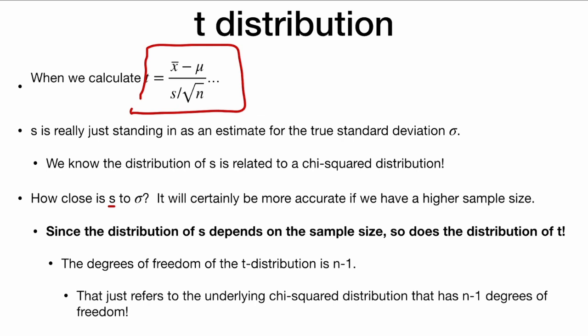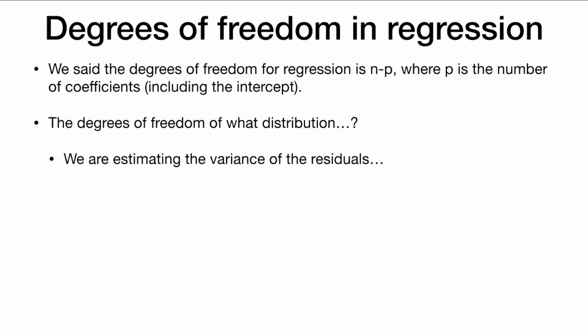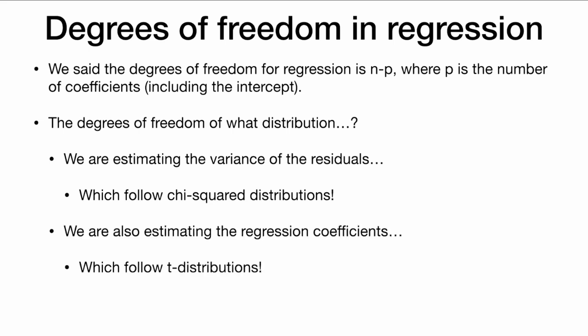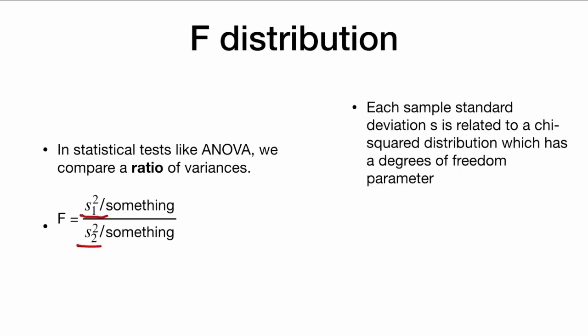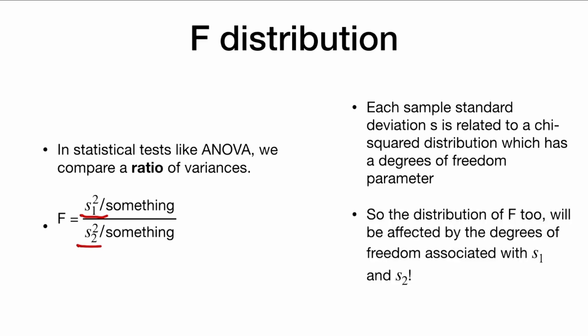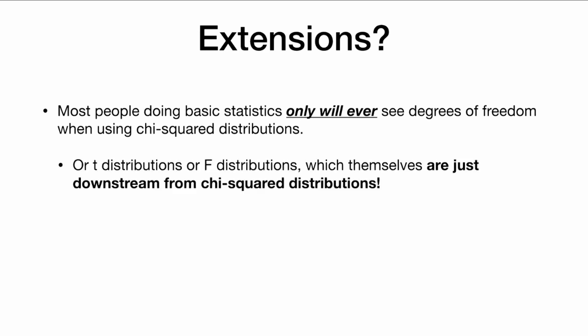The t-distribution is really downstream from the chi-square distribution. In regression, the degrees of freedom is n minus p, where p is the number of coefficients including the intercept. If we are estimating the variance of the residuals, that follows a chi-square distribution with n minus p degrees of freedom. The regression coefficients — the slopes — follow t-distributions with n minus p degrees of freedom. We can also estimate the fit of the entire model using ANOVA, which relies on an F-distribution, a ratio of two variances. Each sample standard deviation s is related to a chi-square distribution, so the distribution of F is affected by the degrees of freedom associated with both variances. Most people in basic statistics will only see degrees of freedom in chi-square, t, or F distributions — all downstream from chi-square.